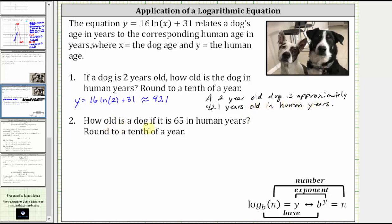Number two, how old is a dog if it is 65 in human years? Again, round to a tenth of a year. So here we are given y, the corresponding human age. We want to find x, the dog age.